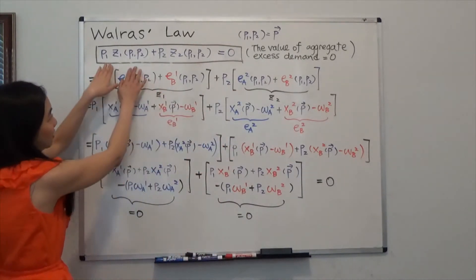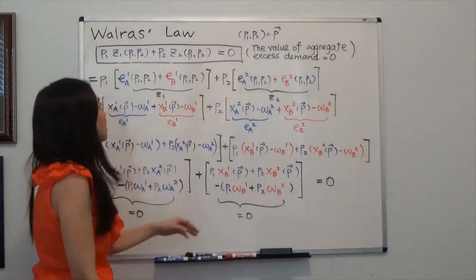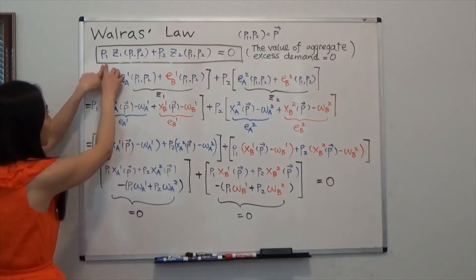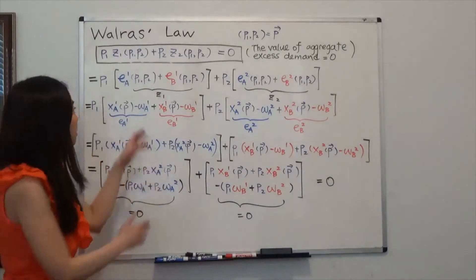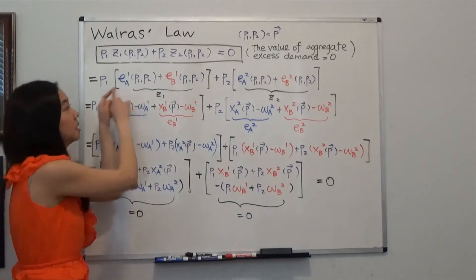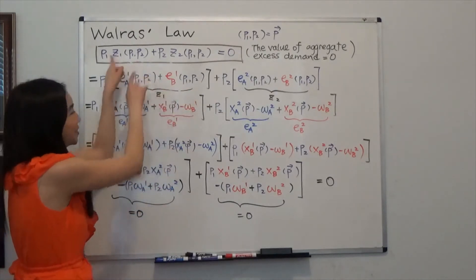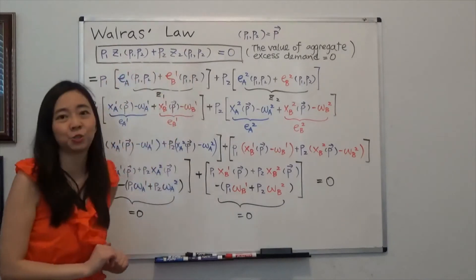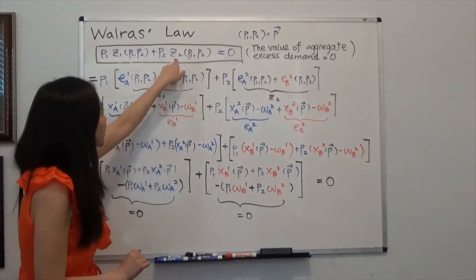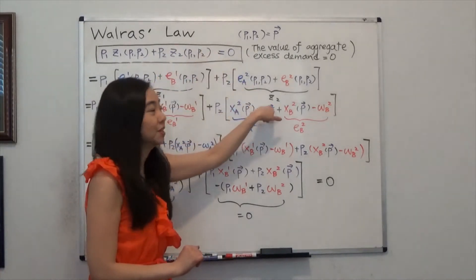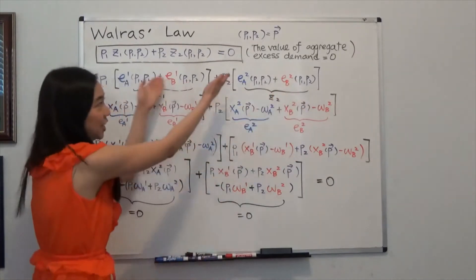We're going to start from the left-hand side and eventually you'll see that when you sum them up, you get zero. On the left-hand side we have p1 times z1. What is z1? Z1 is just the excess demand of good one from Alice plus the excess demand of good one from Bob. You sum them up, you get z1. And z2 I'm breaking down into the excess demand for good two from Alice and from Bob. I didn't change anything — I'm just breaking it down.